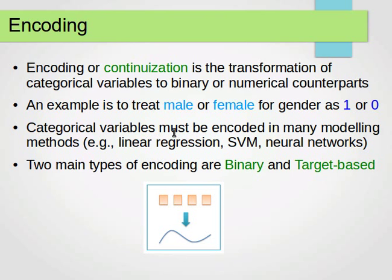Categorical variables usually must be encoded in many modeling methods. For example, if we do linear regression, support vector machines, or neural networks, this happens in the background: converting or encoding categorical into numerical.